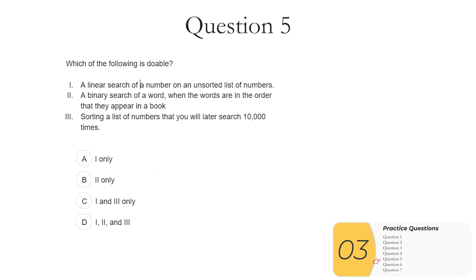Question five. Which of the following is doable? One. A linear search of a number on an unsorted list of numbers. This is definitely doable. In fact there is no such thing as a binary search because the list is unsorted. Linear search is the only thing you can do here and so one is true. Two. A binary search of a word when the words are in the order that they appear in a book. So this is something that you cannot do. There is a sorting of some sort. I guess the sort is in the order that the words appear in the book. But this type of sort is not going to allow you to eliminate half the remaining items per iteration. And that's the important thing. The sorting allows you to eliminate half the items per iteration. But there's no way to do that here. You can't say I'm going to go higher, I'm going to go lower. So two is not possible.